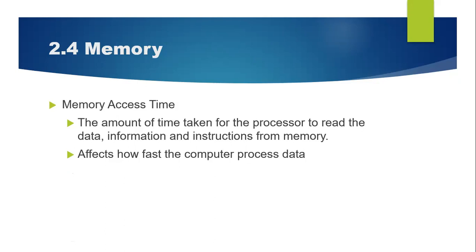Kemudian kita ada satu lagi terms — ni bukan jenis memory, tapi ni terms dalam memory, perkataan yang anda kena tahu — which is memory access time. Memory access time is actually the amount of time taken for the processor to read the data, information, ataupun instruction from memory. Berapa kelajuan data tu dibaca affects how fast the computer processes data. Memory access time memainkan peranan dalam kelajuan untuk kita proses data dalam komputer.